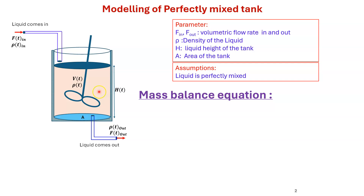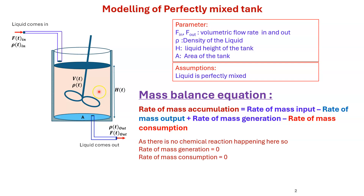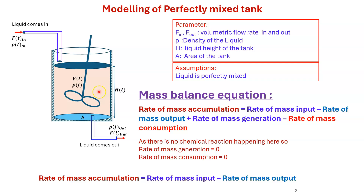Now I have to write the mass balance equation. The mass balance equation states: rate of mass accumulation equals rate of mass input minus rate of mass output, plus rate of mass generation minus rate of mass consumption. Since there is no chemical reaction occurring, the rate of mass generation and rate of mass consumption are both zero. So the equation simplifies to: rate of mass accumulation equals rate of mass input minus rate of mass output.